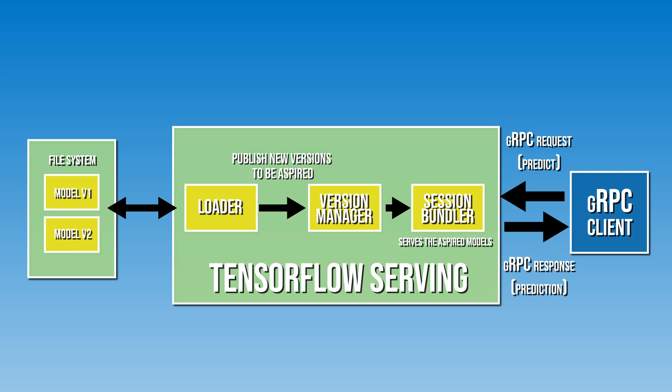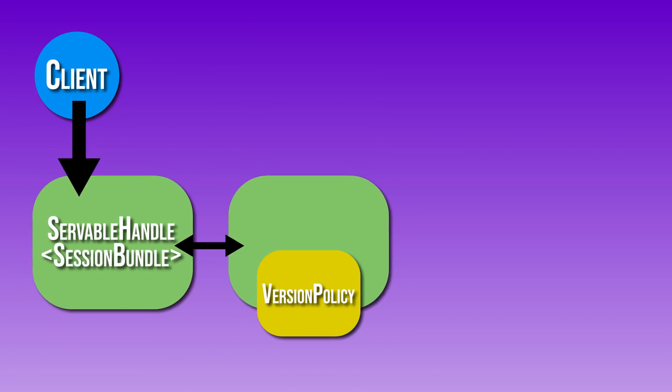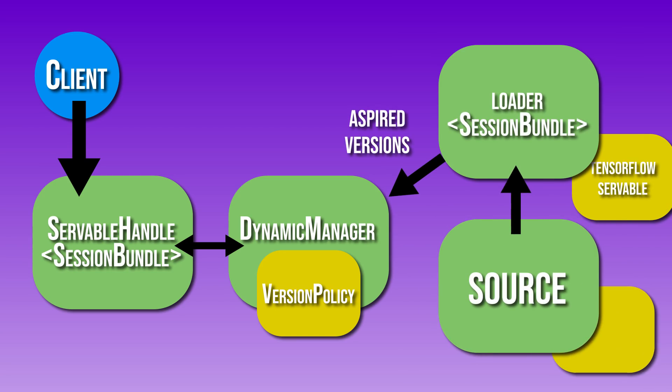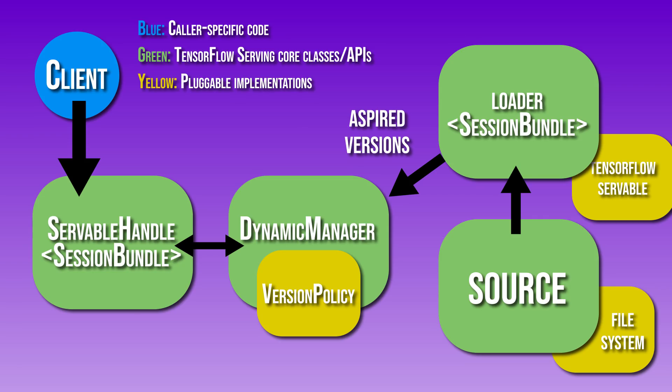It could be a single shard of a lookup table or one machine learning model or five of them. Let's say we have a model that is trained to detect fraudulent data in a Bitcoin transaction data set. We call this a source. Later on as we get more users, we retrain our model on a new version of the data and therefore have a new model with all new weight values. The source will detect a new version of the model weights. It will then create a loader that contains a pointer to the model data on disk. Loaders manage the lifecycle of a servable.